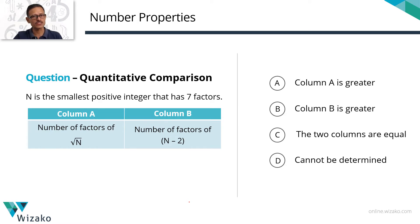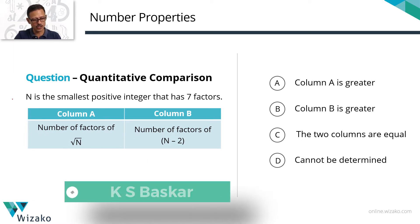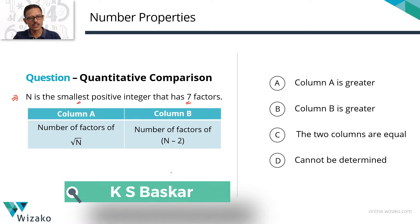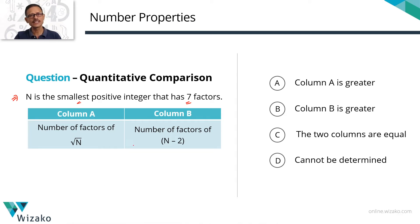GRE Quantitative Comparison practice question from the topic Number Properties. This is a hard question. There are two columns in which information is given, but before that there is some data common to both columns. N is the smallest positive integer that has got seven factors. Quantity in column A is the number of factors of square root of N. Quantity in column B is the number of factors of N minus 2.